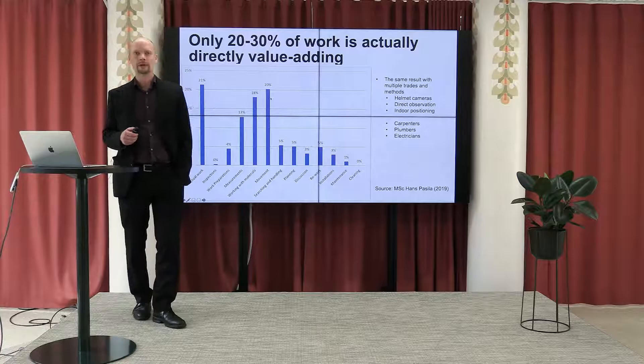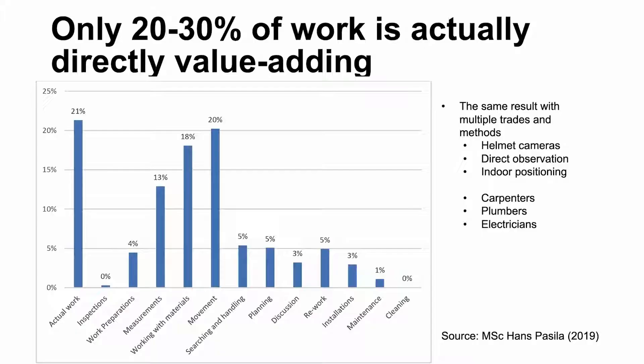When we go deeper into this phenomenon, we find that only 20 to 30 percent of work is actually directly value-adding. This is a study by one of my master's students who did his thesis on carpenters and their productivity, using helmet cameras to allocate time into various buckets. Actual work is just 25.1 percent of work time used — and that's with all breaks removed, so 21 percent of the time without breaks. Much of the time is movement around the building and working with materials, which is not value-adding from the customer's point of view.